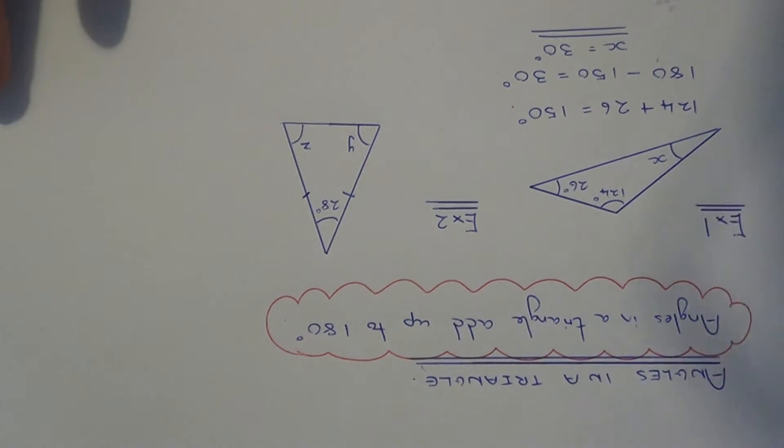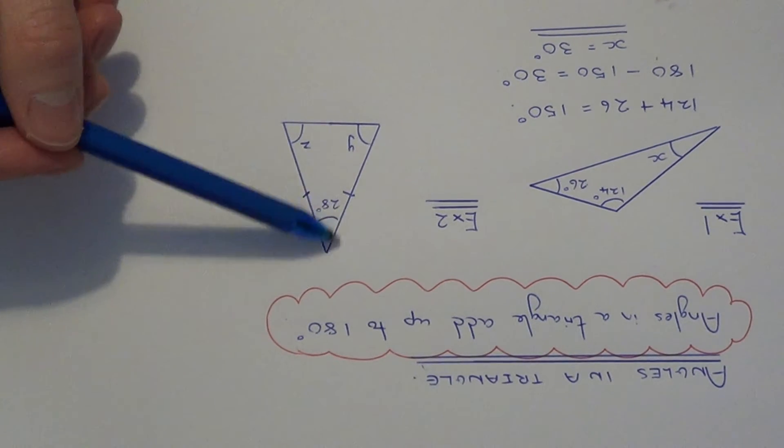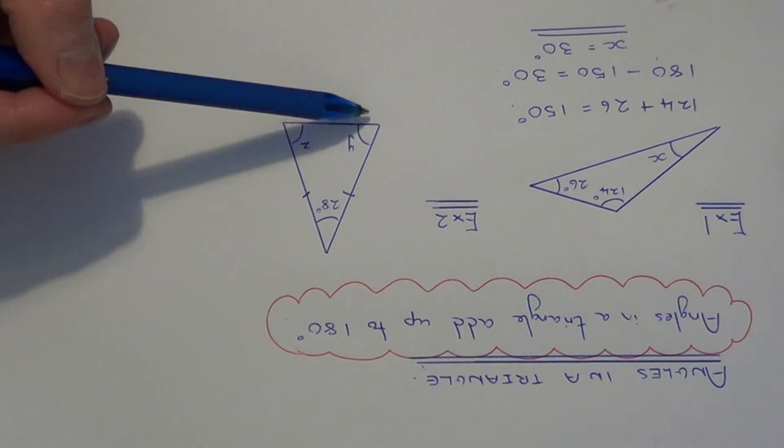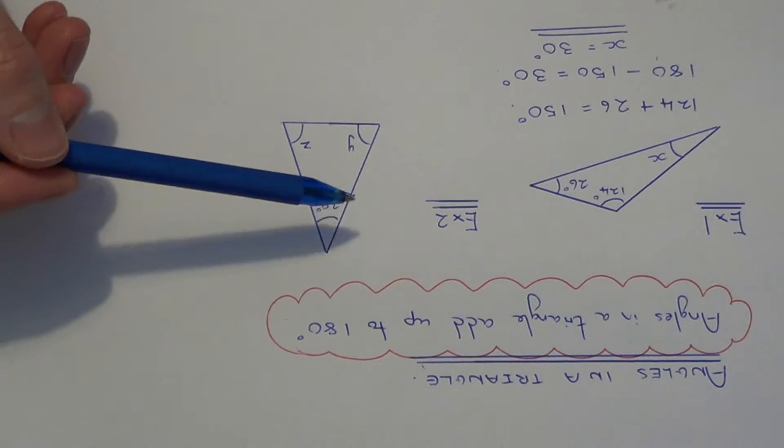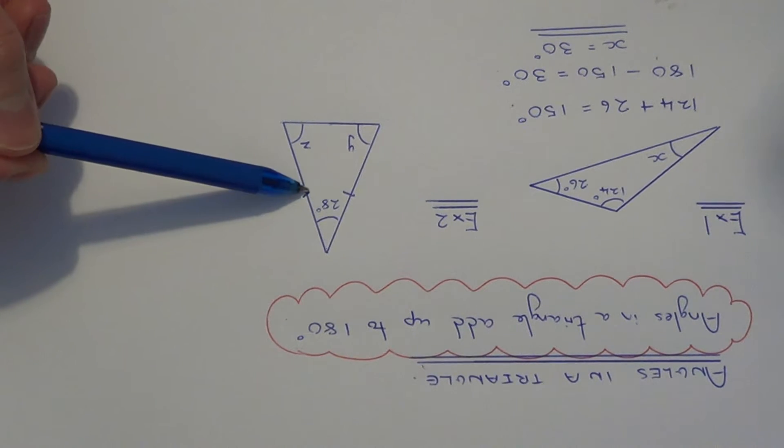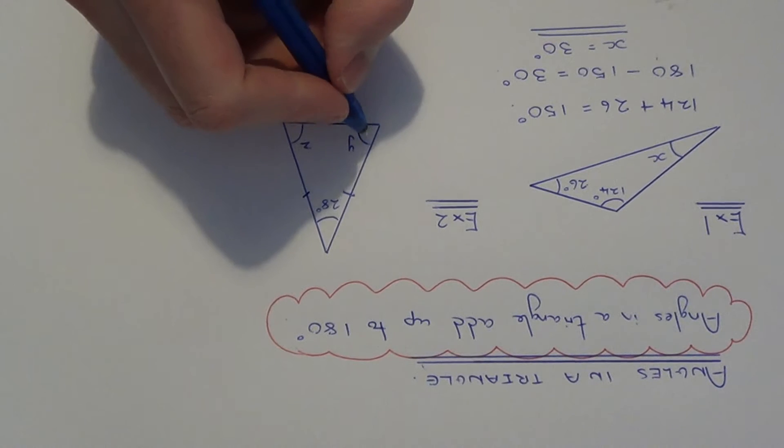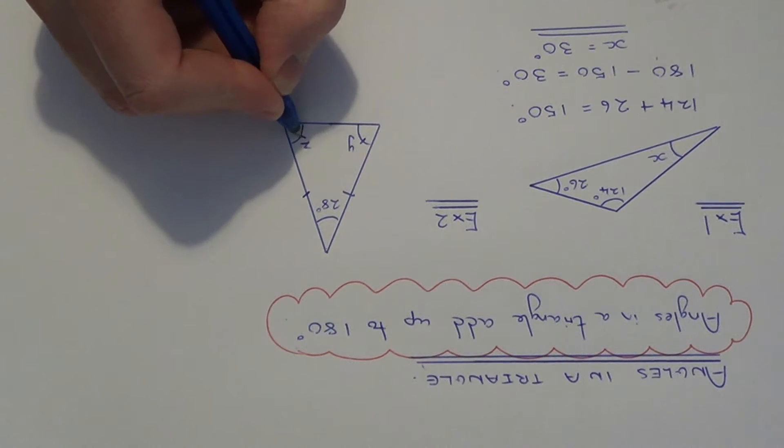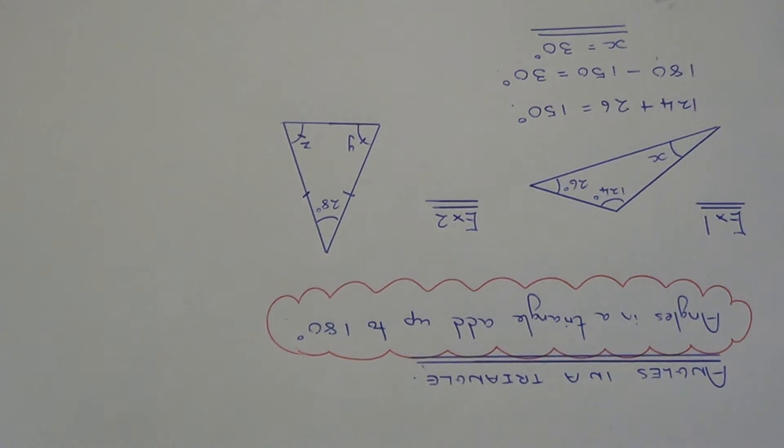Let's move on to example 2. Example 2 is a little bit harder because we have an isosceles triangle—these two sides are the same length. This means that the two angles at the bottom of this isosceles triangle are also the same.